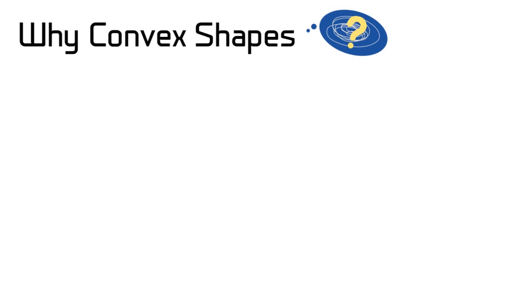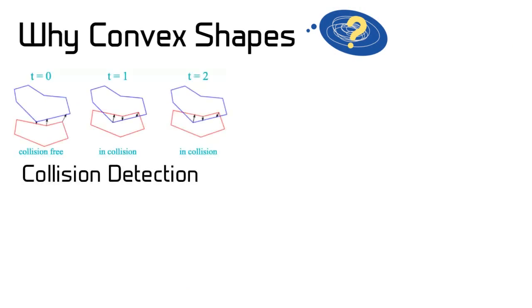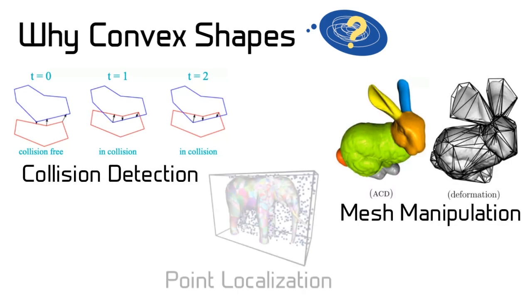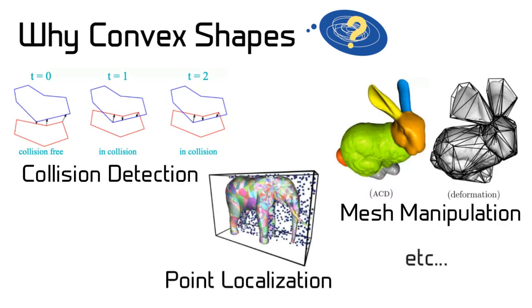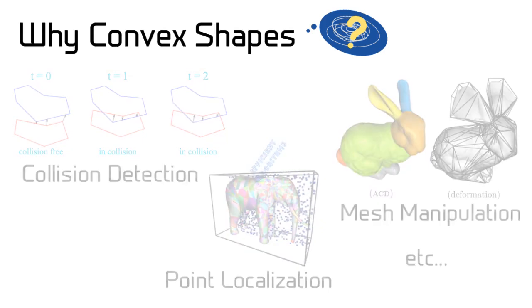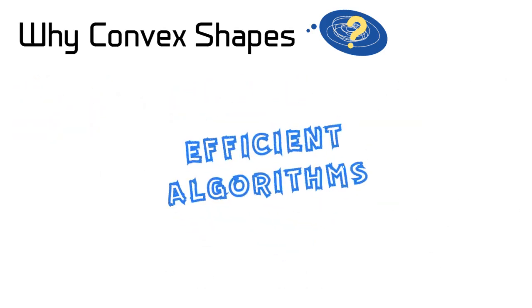Many fundamental geometry problems in rendering and physics simulation, such as collision detection and point localization, are non-trivial and computationally expensive to solve for general meshes. However, if input shapes are convex polyhedra, many problems can be formulated as convex optimization problems, and efficient algorithms can be specially designed.